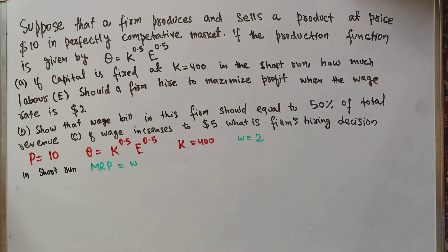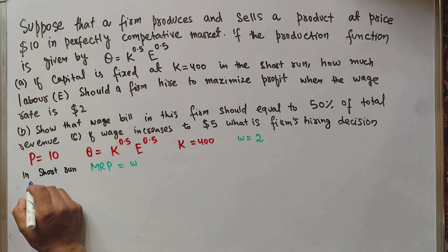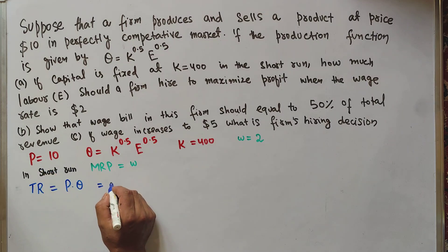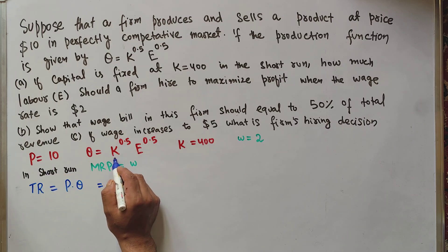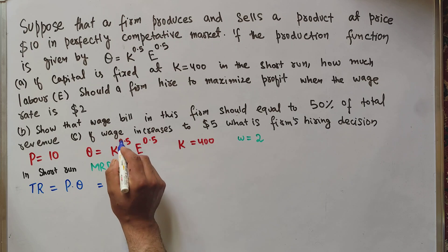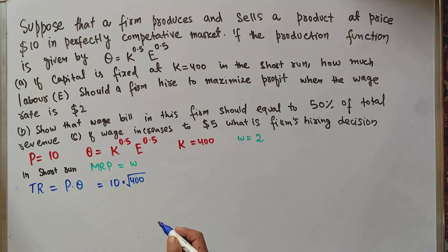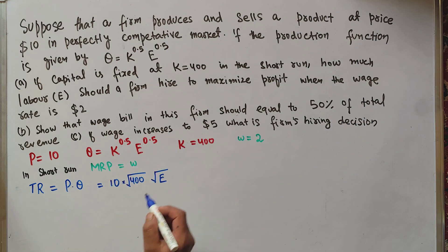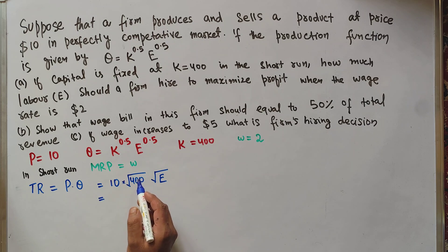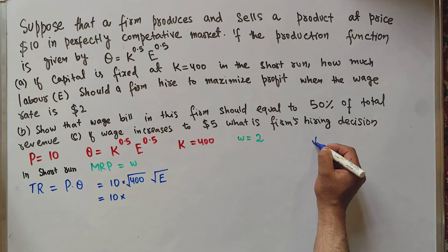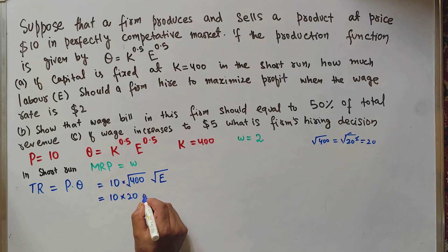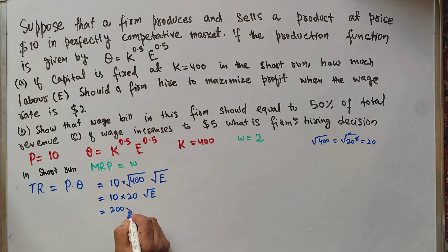To find the marginal revenue product, we first need to find the total revenue product. Total revenue equals price times output. Price is $10, and K is fixed at 400, so we can write: TR = 10 × 400^0.5 × E^0.5.